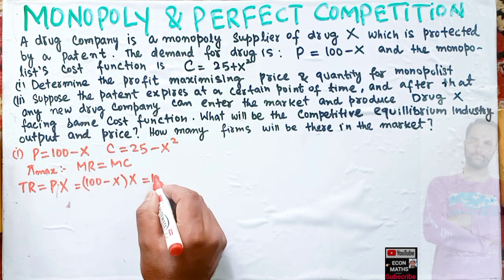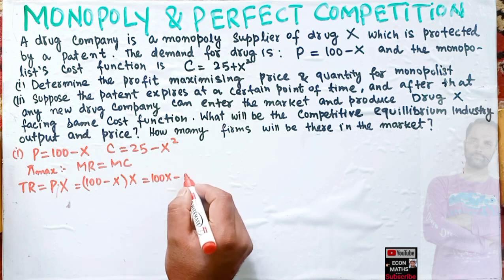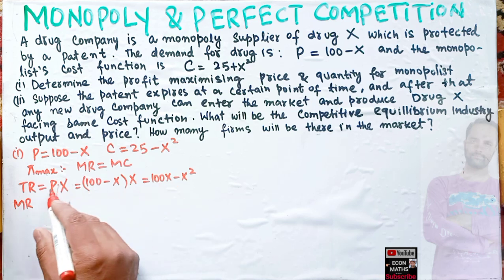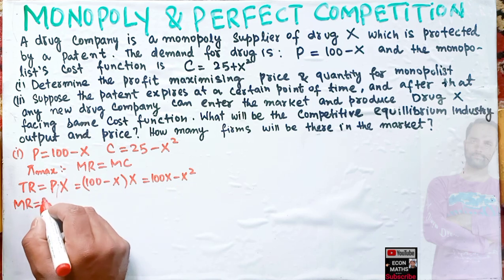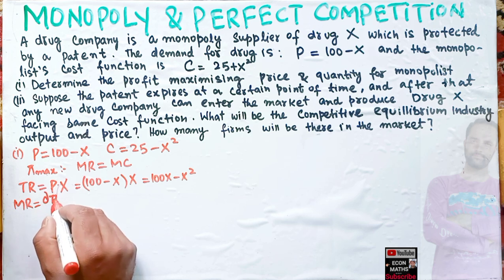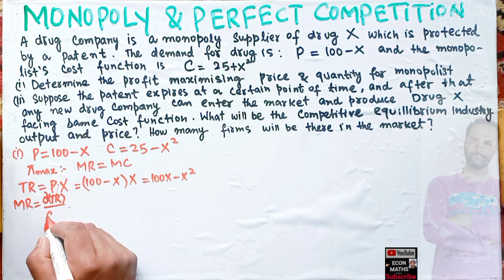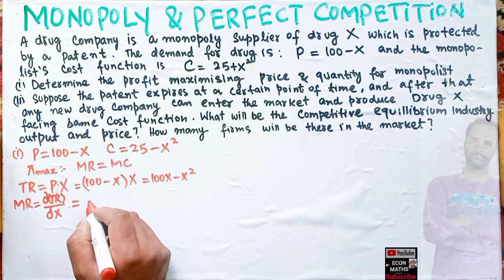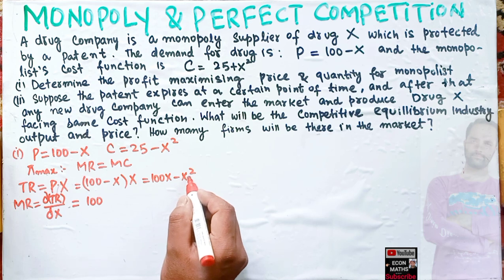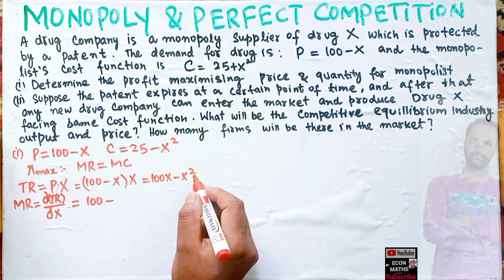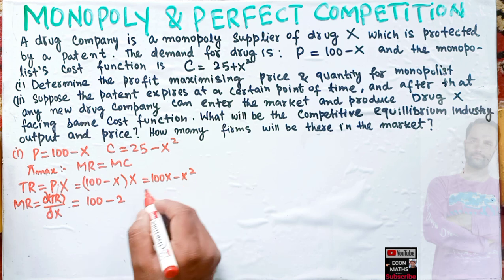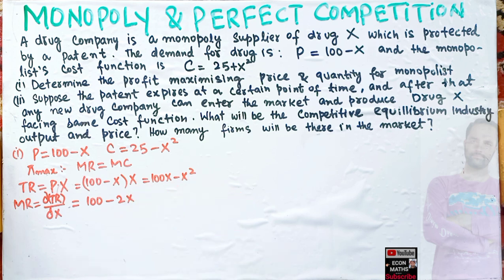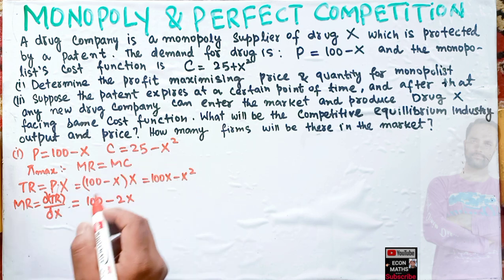Total revenue is p × x = (100 - x) × x = 100x - x². Marginal revenue is simply the derivative of total revenue with respect to output x. Taking the derivative: derivative of 100x is 100, and derivative of x² is 2x by the power function rule, so MR = 100 - 2x.